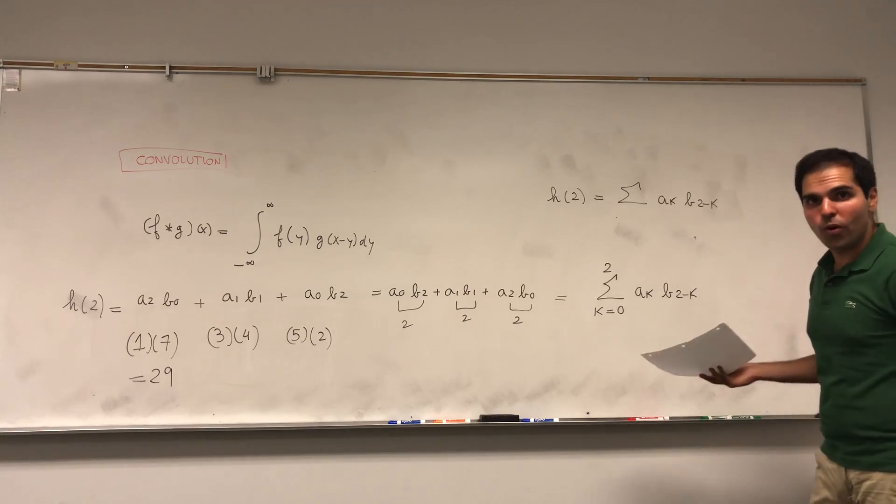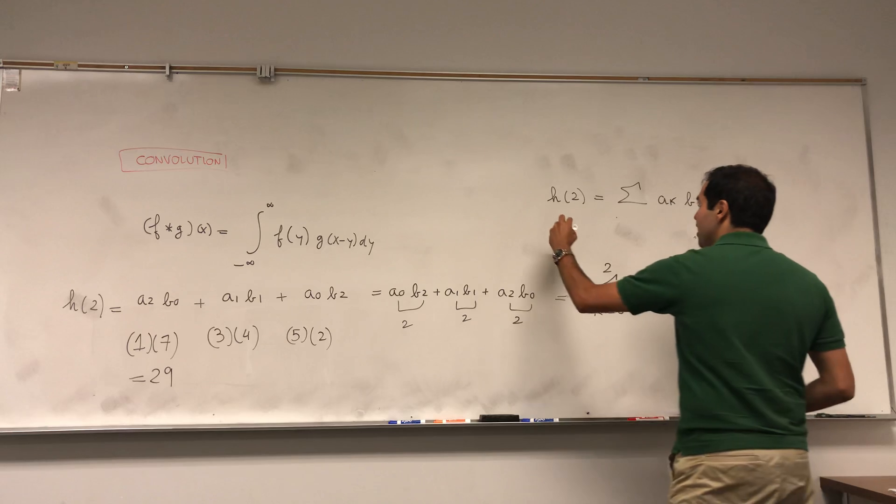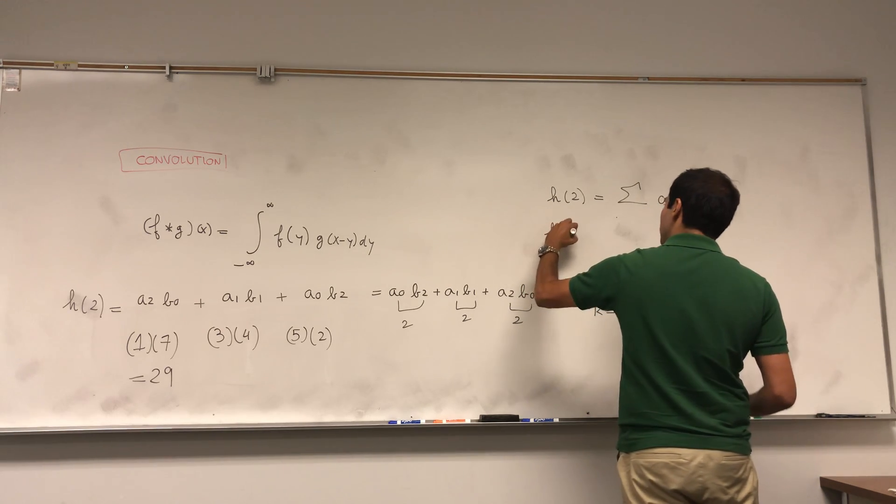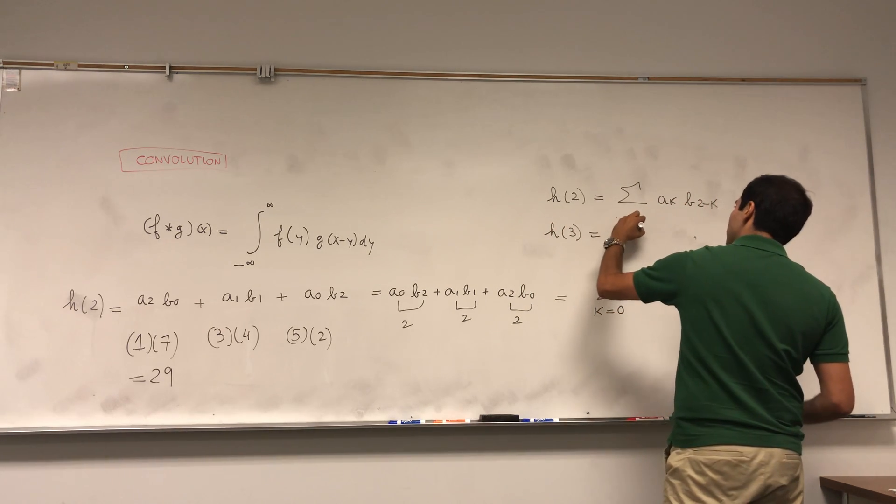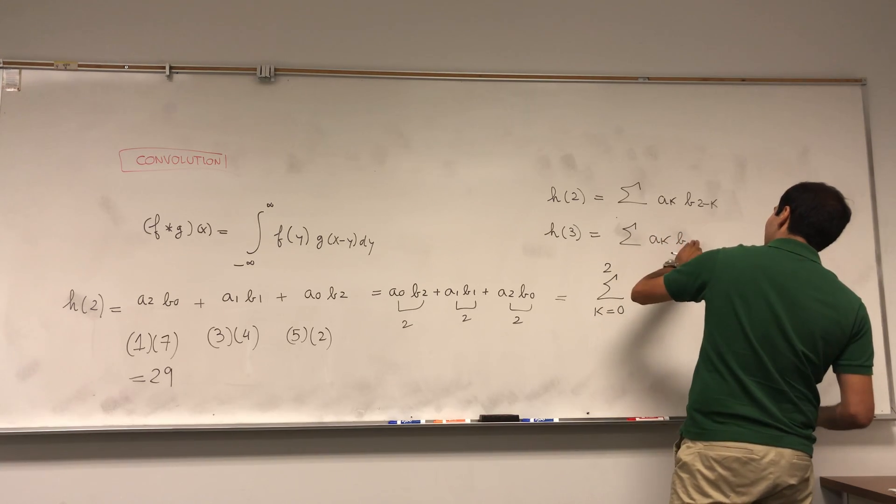And in fact, this works for any coefficient. Namely, if you want like h(3), you would just do the sum aₖ b(3 minus k).